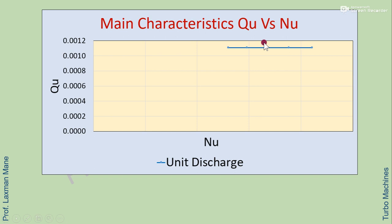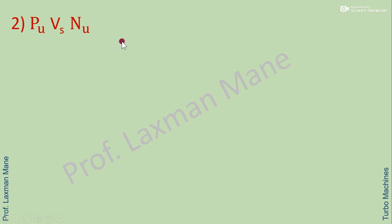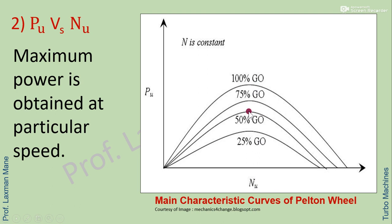From actual practical results, unit discharge remains constant and unchanged for all unit speeds. The second curve is unit power Pu versus unit speed Nu for different gate openings, where maximum power is obtained at a particular speed.